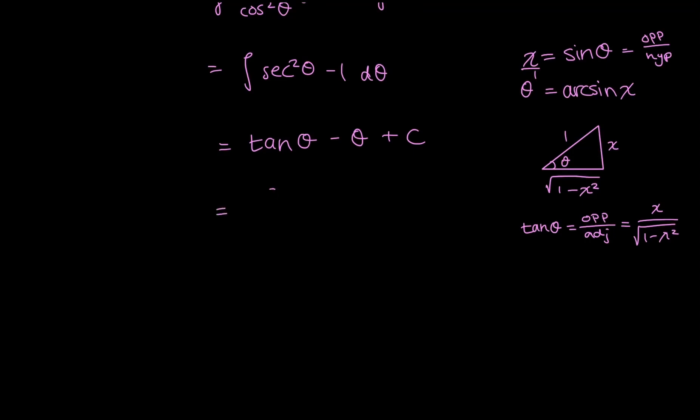All I have to do is put everything together. So tan theta, as I just found, is equal to x over square root of 1 minus x squared. And my theta is equal to arc sine x. All plus my arbitrary constant C, because this is an indefinite integral. And that's it.